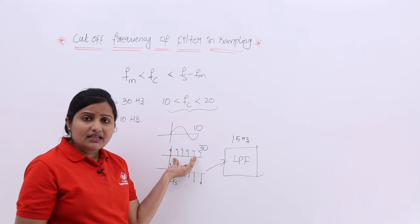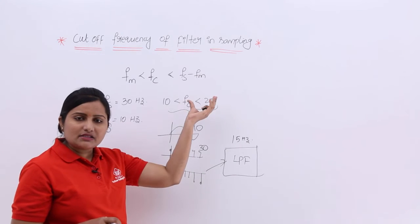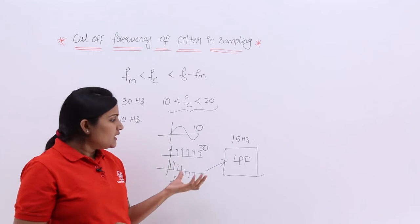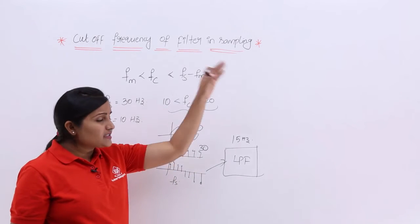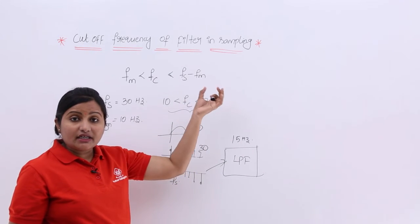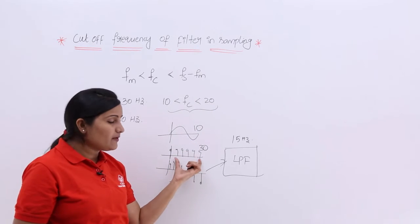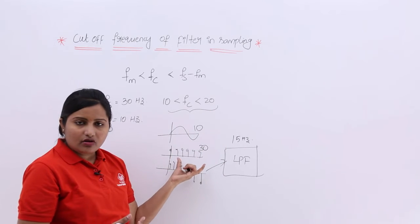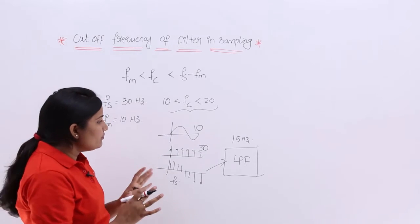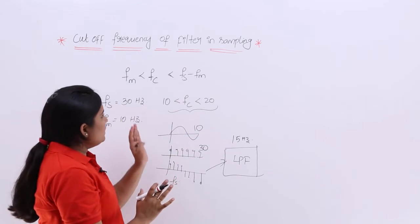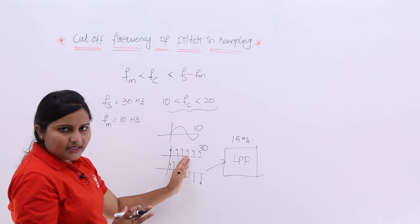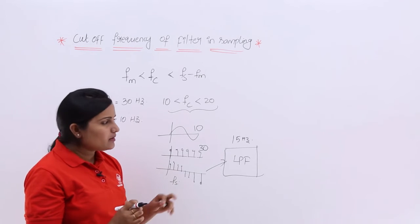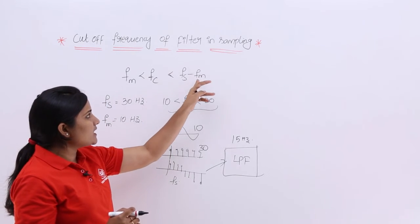The pulse train having 30 Hz can bear this much noise. If any noise signals enter within that range, this can be tolerated. But if you exceed that range, those signals will be treated as high-frequency signals. So whenever you have FS as your pulse train frequency and FM as your message frequency, the cutoff frequency of the filter must be in the range FM < FC < FS − FM.